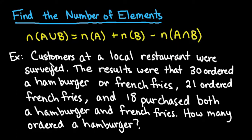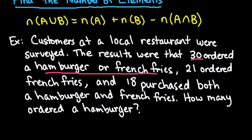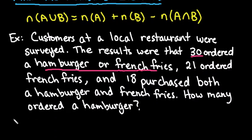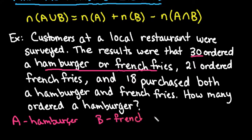So what we have here, customers at a local restaurant were surveyed. The results were that 30 ordered a hamburger or french fries. So this right here would be the first part, the N, A, or B. So if you want to, you could set it up that A is going to represent hamburger and B represent french fries because that's what we are talking about.